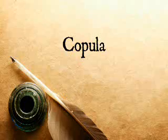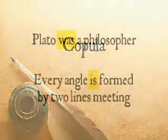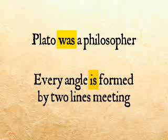The copula represents the act of the mind agreeing, either affirming or denying. It is usually expressed by words like am, is, are, are also, am not, is not, are not, etc. For example, 'geese are not chickens' — the copula shows that the ideas do not agree.